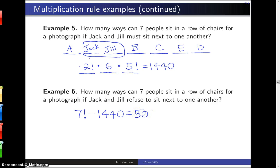So, seven factorial is five thousand and forty. Subtract out the fourteen forty and that leaves us with thirty six hundred different arrangements where Jack and Jill are sitting apart.